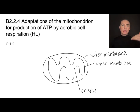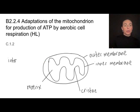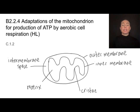On the inside of that inner membrane is an area called the matrix. And in between this inner membrane and outer membrane, we have something called the intermembrane space — not the inner membrane space. Inter means between, so this is literally the space between the two membranes.